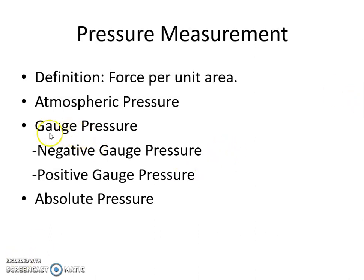Now let us see gauge pressure. It is the pressure measured with the help of a pressure measuring instrument in which atmospheric pressure is taken as standard value. The atmospheric pressure on the scale is usually marked as zero. Gauges record the pressure above or below the local atmospheric pressure, since they measure the difference in the pressure of the liquid to which they are connected and that of the surrounding air. If the pressure of the liquid is below the local atmospheric pressure, then the gauge is called as a vacuum gauge, and the recorded value indicates the amount by which the pressure is below the local atmospheric pressure, which is called as negative pressure or negative gauge pressure.